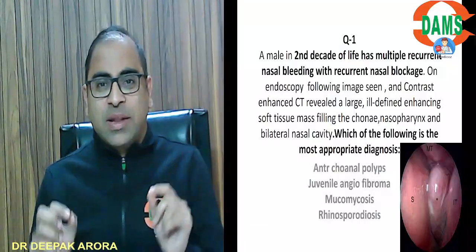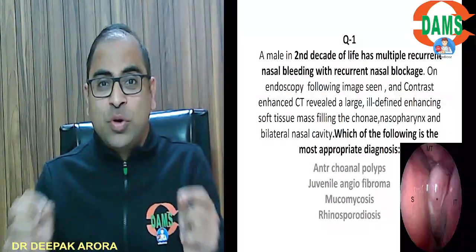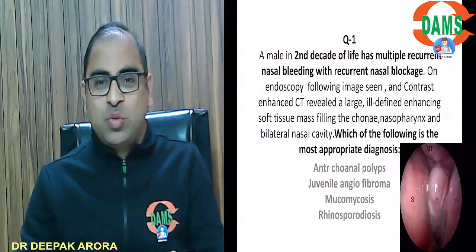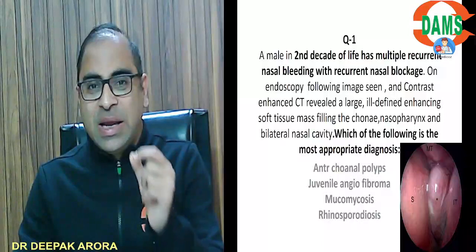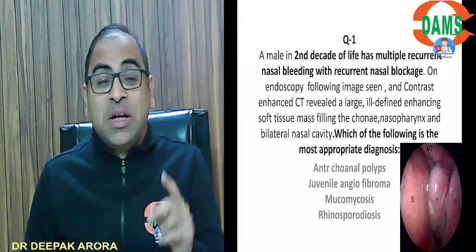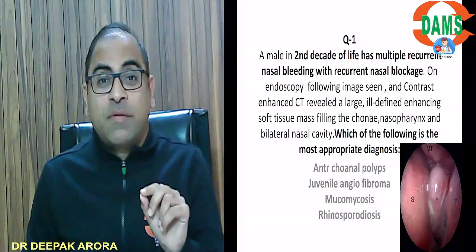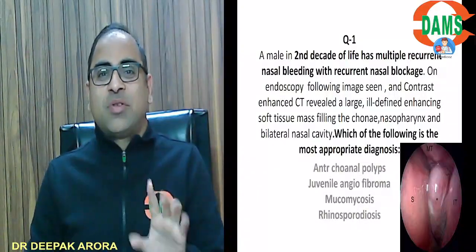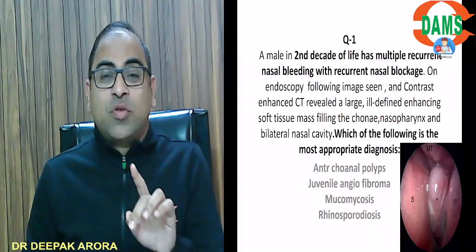The fourth option is rhinosporidiosis. Your eyes will be searching for which word? We'll be searching for 'mulberry.' Mulberry-like polyps — rhinosporidiosis. Mulberry-like nasal mucosa — that is hypertrophic rhinitis. But the word mulberry is not there in this MCQ, so I will not make the diagnosis of rhinosporidiosis.